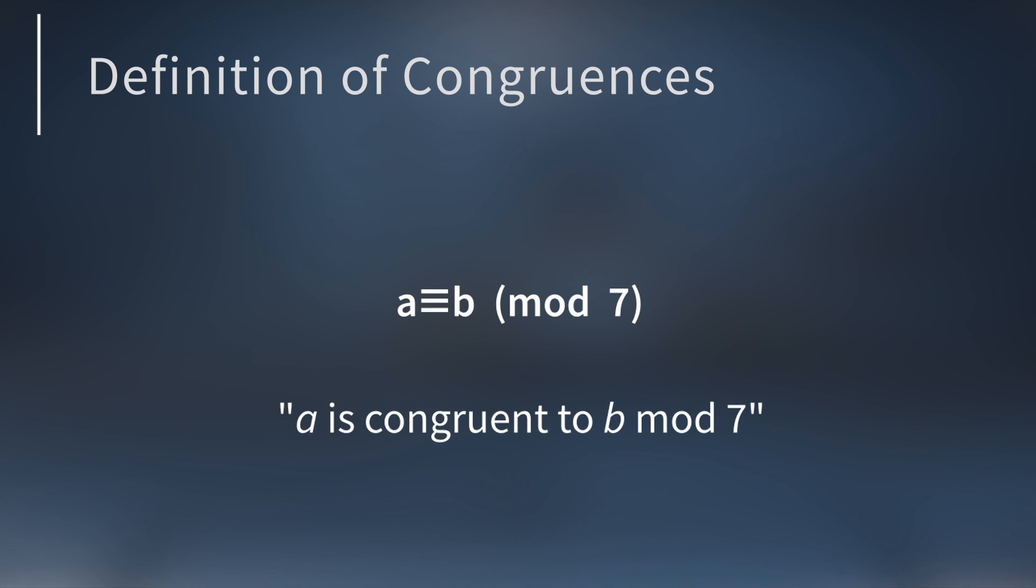The symbol with three lines is called the congruence symbol. The number inside parentheses is called the modulus. That's why we write mod inside parentheses. It's short for modulus. So here the modulus is 7.